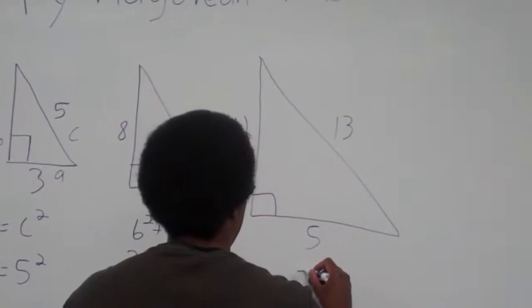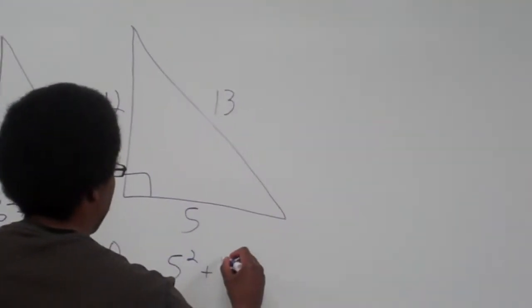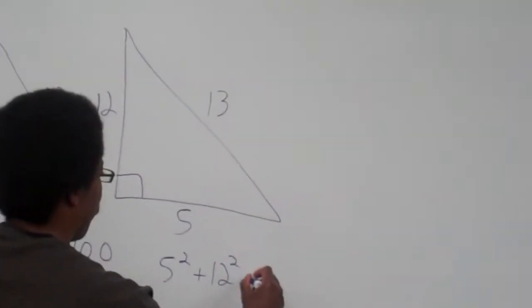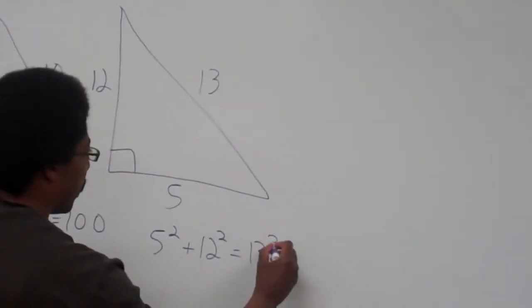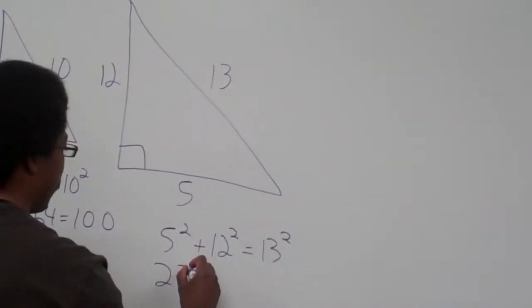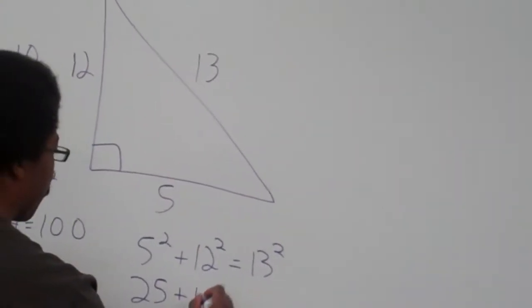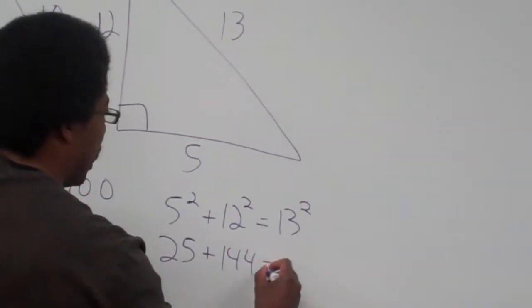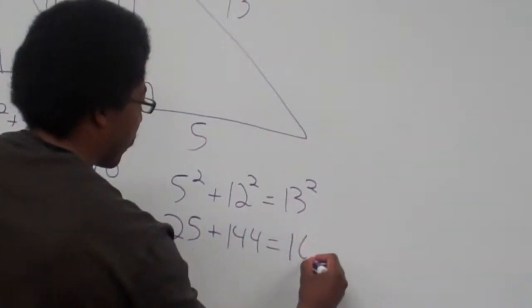Over here, we're going to have 5 squared plus 12 squared equals 13 squared. 5 squared is 25, 12 squared is 144, and that equals 13 squared, which is 169.